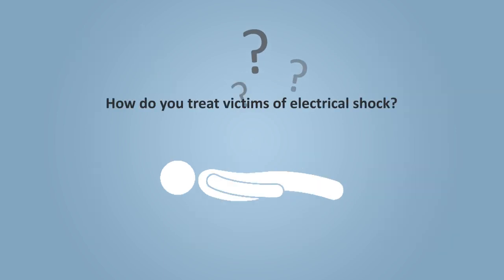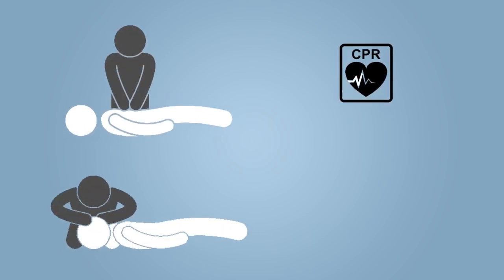How do you treat victims of electrical shock after they've been separated from the electrical source? Check for breathing and a heartbeat. If the victim is not breathing, begin mouth-to-mouth resuscitation. If the person's heart has stopped beating, you'll need someone trained to administer CPR.